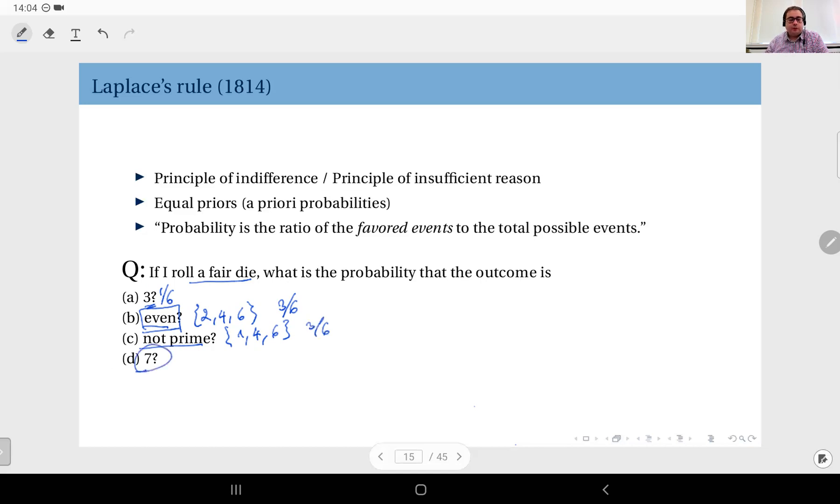Now what about this one? If you don't think this through, you could say okay, seven is just one outcome, therefore one divided by six should be the answer. But obviously that's not the case. Why? Because seven is not among the possible outcomes. You have to recognize seven as an impossible event. Therefore, you should assign zero probability to this outcome.